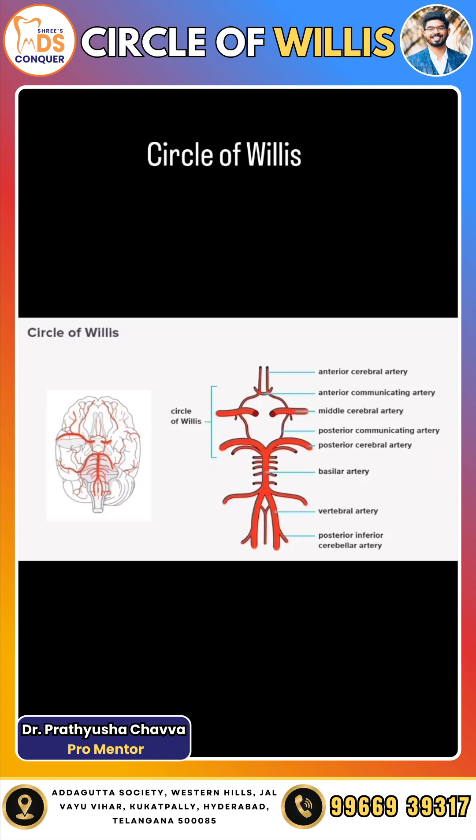So this is the Circle of Willis, which acts as a major collateral blood flow between the anterior and posterior circulations of the brain.